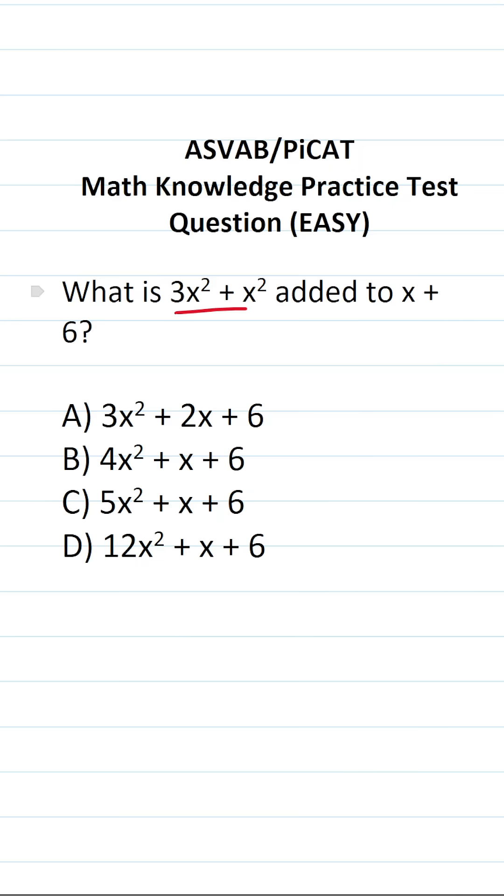So we're going to be combining these two polynomials, and that, as it happens, is pretty easy to do when you're doing addition. So it's 3x squared plus x squared added to x plus 6.